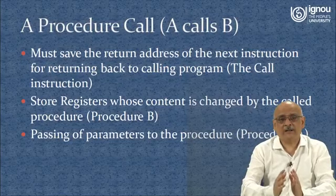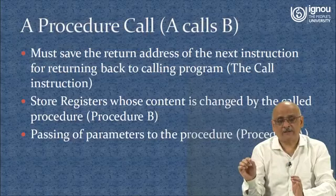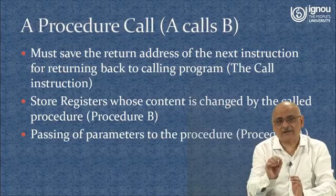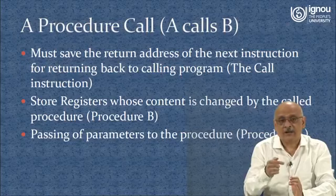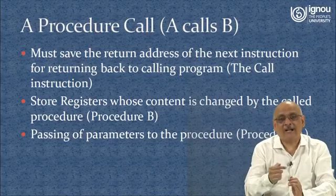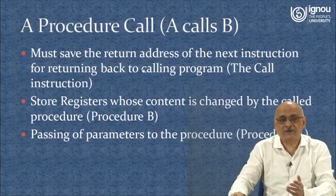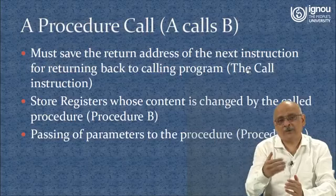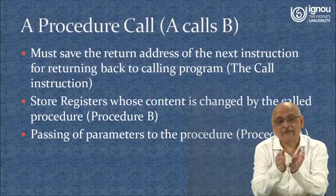When A calls B, what happens? The return address — a particular statement of A will be calling function B. When you are executing that call statement, the program counter is already on the next instruction. That next instruction is the return address, because the call should take the program to function B. B's code should execute, and when B returns, it should come back to the next instruction after the call — that address is already in the program counter. So the call instruction must save the return address of the next instruction for returning back to the calling program.